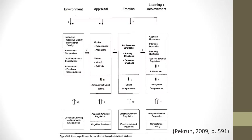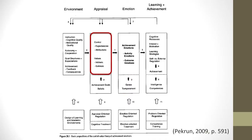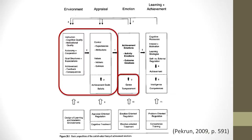Here's a figure I'll use to explain the basic propositions of the control value theory. It shows the emotions students feel in an achievement setting — activity and outcome emotions. A box indicates that emotions are directly affected by stable factors such as genes and temperament. Another box shows the control and value appraisals students make right before feeling an emotion, and these appraisals directly affect emotions. The appraisals are also affected by achievement goals and beliefs, as well as environmental factors such as instruction, autonomy and competence, goal structures and expectations, and achievement.